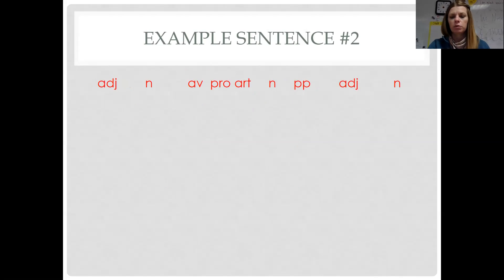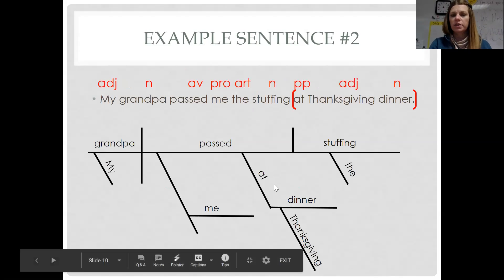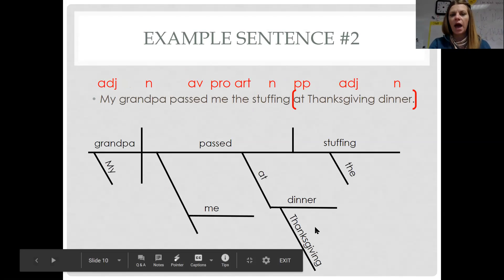Example sentence number two. We have, my grandpa passed me the stuffing at Thanksgiving dinner. Here's our diagram. What is our verb? Passed. Who or what passed? Grandpa. Grandpa passed what? Stuffing. To whom? Me. My grandpa passed the stuffing when? At Thanksgiving dinner. So, this is describing when it happened. That's why it's not describing the stuffing. It goes underneath passed because it's when it happened or when it was passed. It was passed at Thanksgiving dinner.